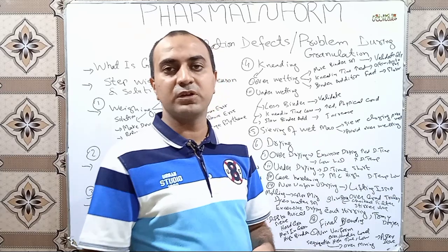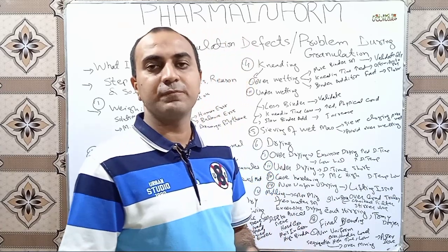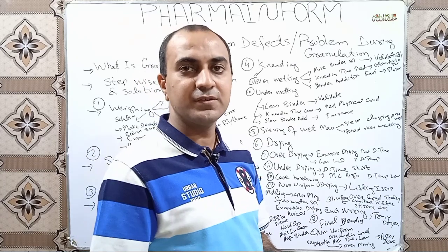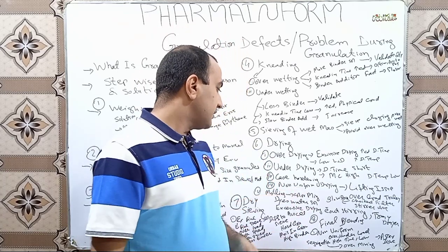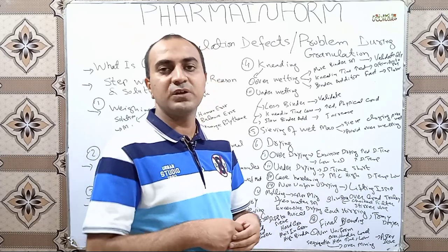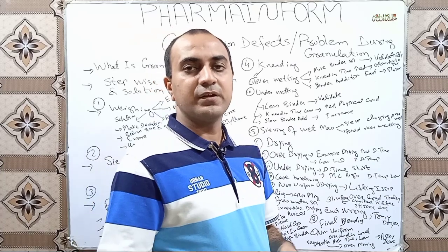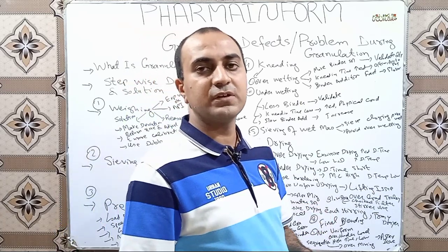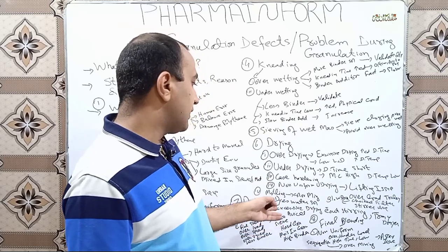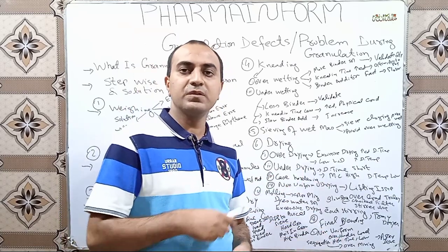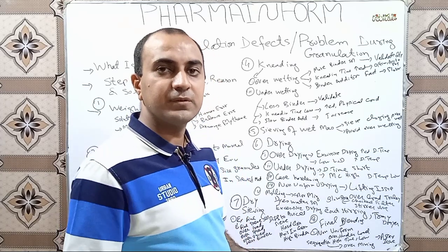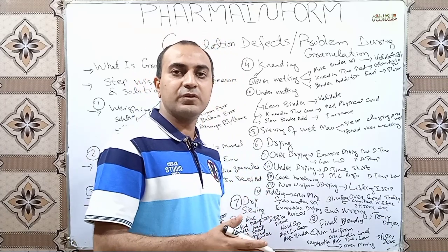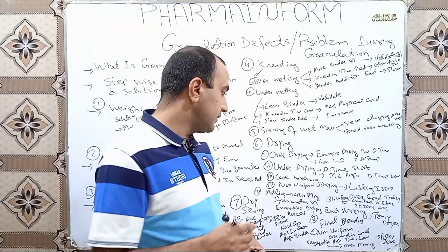Mottling is a very common defect and commonly asked about. Mottling is basically color migration during the drying process. It more commonly occurs in tray dryers and may also occur during FBD. This happens because dyes are water-soluble, and when water evaporates the dyes also migrate. To solve this, use lake colors, use Avicel or microcrystalline cellulose in the formulation, use a stirring system so the wet mass is uniformly mixed, and do not apply rapid heat.